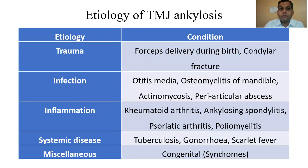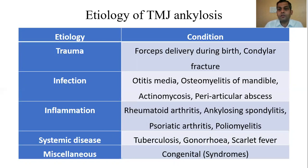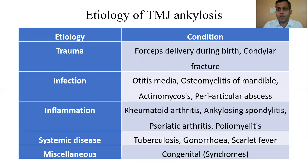For trauma, forceps delivery was blamed in the past, which is not common today; condylar fractures are a common occurrence. Infections include otitis media, osteomyelitis, actinomycosis, and periauricular abscess. Inflammation includes rheumatoid arthritis, ankylosing spondylitis, psoriatic arthritis, and poliomyelitis. Systemic diseases include rheumatic arthritis, pneumonia, and scarlet fever. Miscellaneous factors may include syndromes which have concurrence of Temporomandibular Joint Ankylosis as one of the presenting findings.